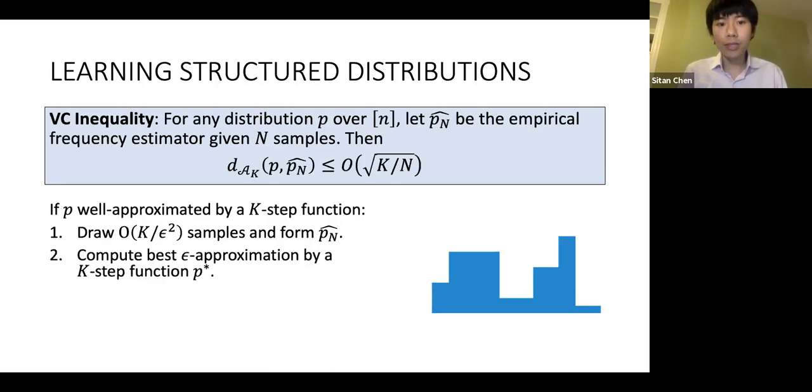Then run a simple dynamic program to compute an approximation of the empirical estimator by a histogram, call it p*. It turns out by several applications of triangle inequality that p* is a good approximation to p, not just in A_k norm, but in L1 distance.